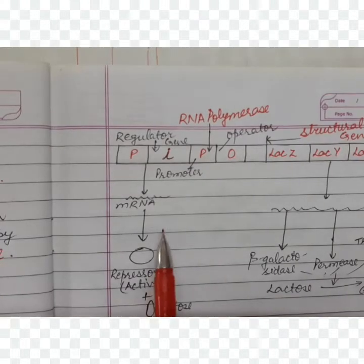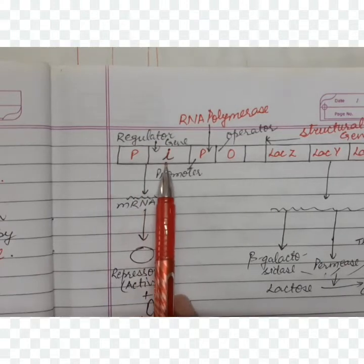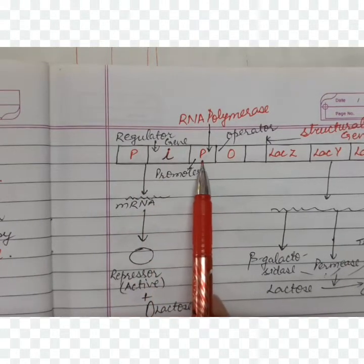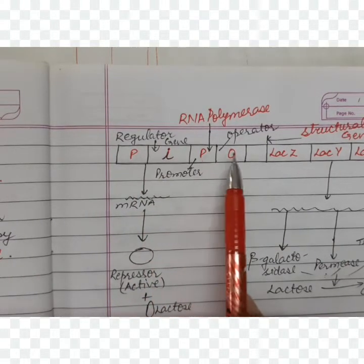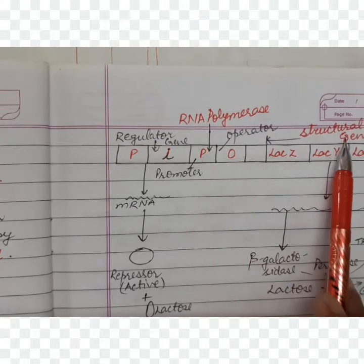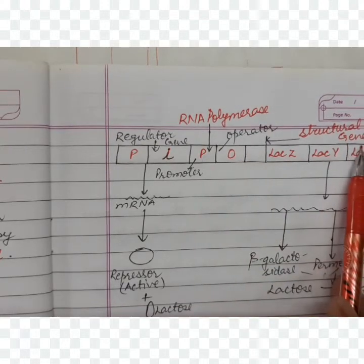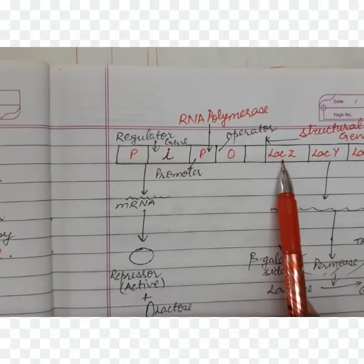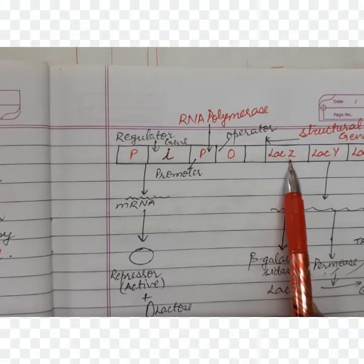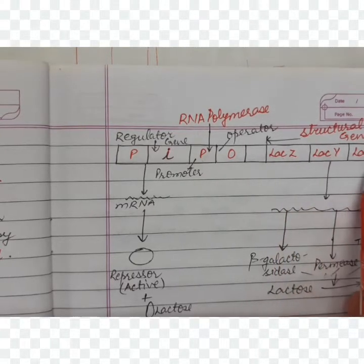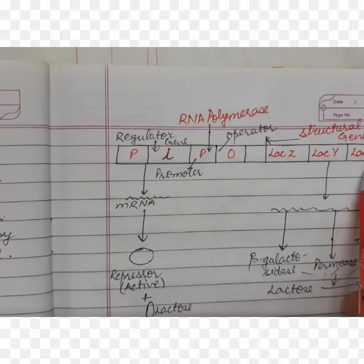The lac operon has a regulator gene, promoter gene, operator gene, and structural genes. There are three structural genes: lac Z, lac Y, and lac A.